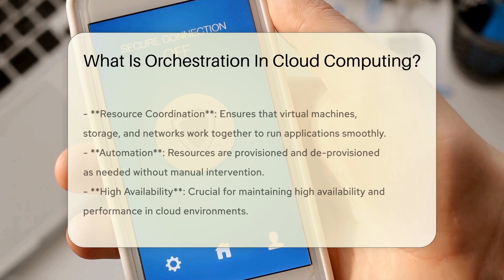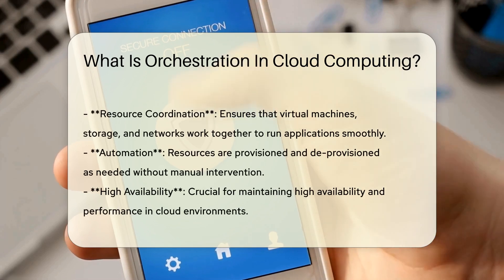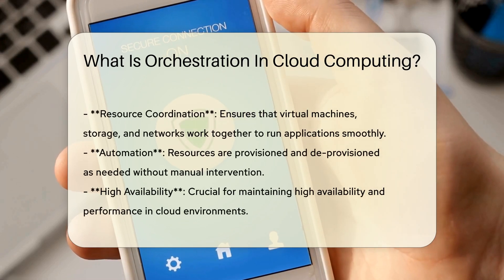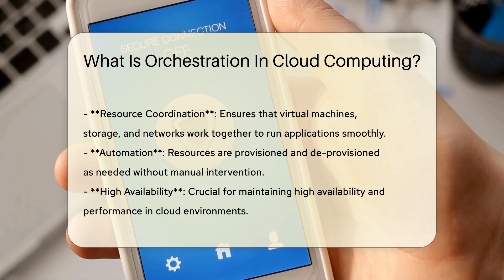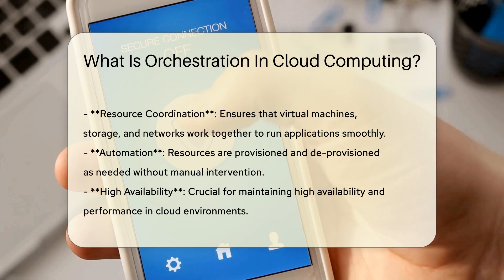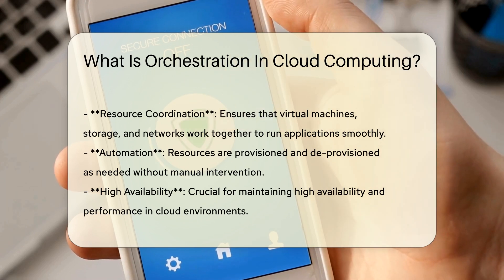In a cloud environment, various resources such as virtual machines, storage, and networks need to work together to run applications smoothly. Orchestration ensures that these resources are provisioned and deprovisioned as needed, without manual intervention. This automation is crucial for maintaining high availability and performance.